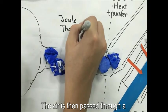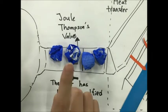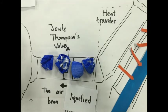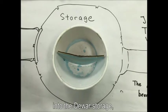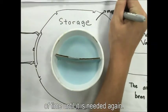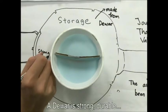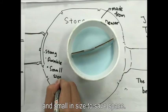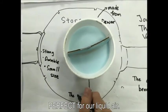The air is then passed through a Joule-Thomson valve where it will be liquefied. Air that has been liquefied will then be channeled into the dual storage, which can be kept for an indefinite amount of time. The dual is strong, durable, and small in size to save space - perfect for our liquid air.